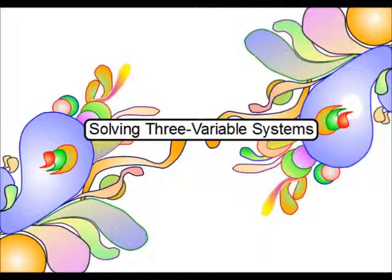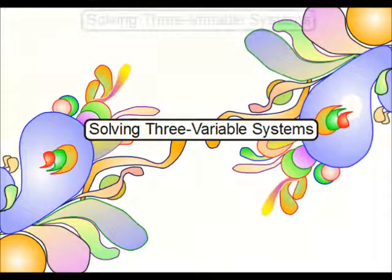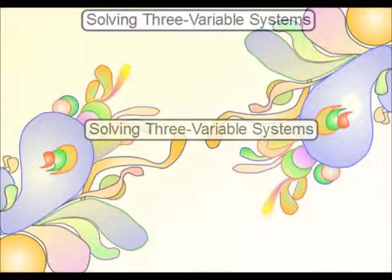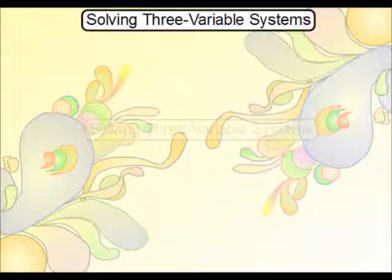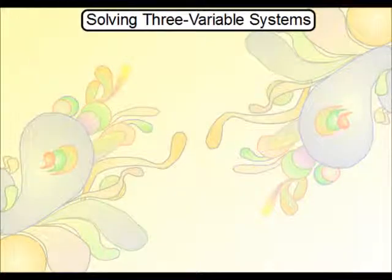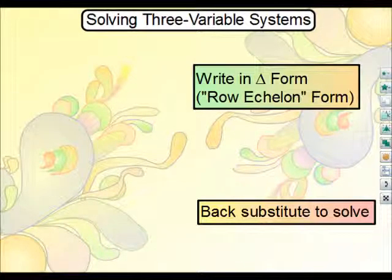Hi, this is Mr. Rees, and we're going to go into three variable systems. Let's get started right away. What I want to first do is just highlight the steps that normally are used to help solve these kind of systems. These are it here. What you'll want to do is you'll want to take a system and you'll want to write it in triangular form, and some textbooks refer to it as row echelon form.